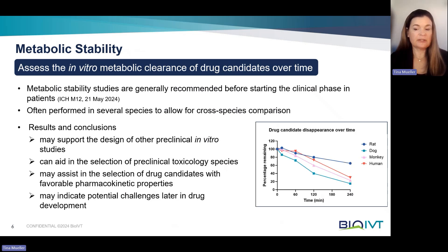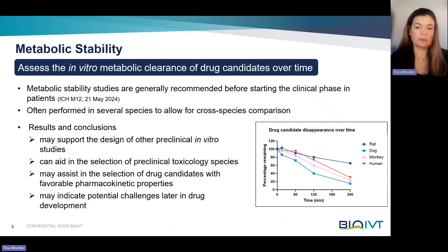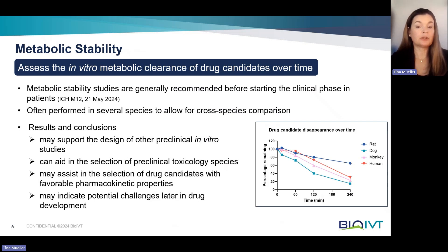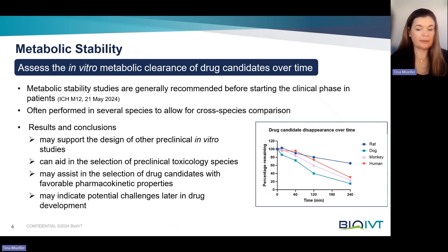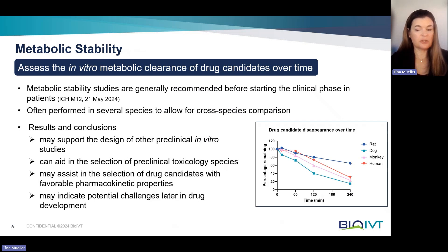Why are metabolic stability studies so important and what kind of insights do the data provide? Generally speaking, the results can provide valuable insights into the metabolism of a drug candidate. For instance, they can help in the design of other in-vitro studies such as DDI studies, help select the preclinical toxicology species, allow ranking of drug candidates by their most favorable PK properties, and indicate potential challenges later in drug development. For all these reasons, we normally recommend performing metabolic stability evaluations in several species early in drug development.